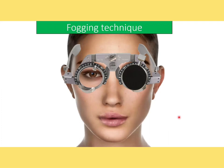How to do the fogging test: done monocularly with one eye occluded. Place the objective refraction finding in the trial frame (retinoscopy or autorefractometry value). Select a plus lens that makes the patient's visual acuity at least two lines worse than with the objective refraction value. Assume the objective finding is plus one; now add a fogging lens of plus 2.5 diopters spherical in front of the right eye. Slowly reduce the plus lens in 0.50 diopter steps, asking the patient to read the chart and report when lines appear clear.